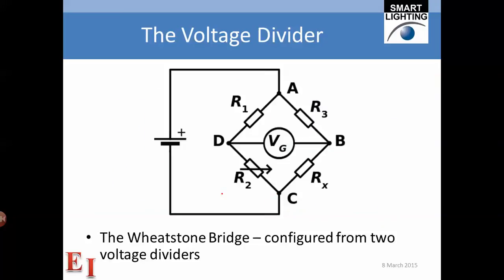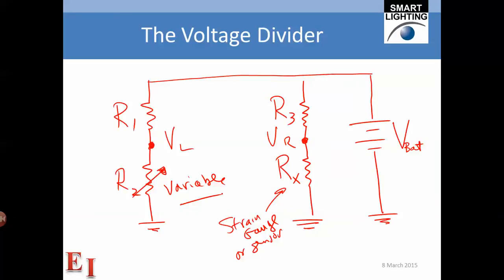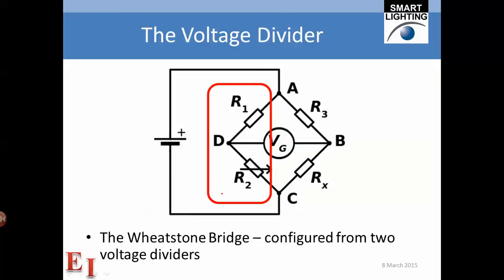Now this is what the configuration looks like in a more standard way of drawing it. It's drawn in this diamond shape. And we have the divider that we saw on the left and the divider that we saw on the right, and they've been combined together. This configuration takes a lot more room to draw, and therefore the conventional way of drawing it looks like this.